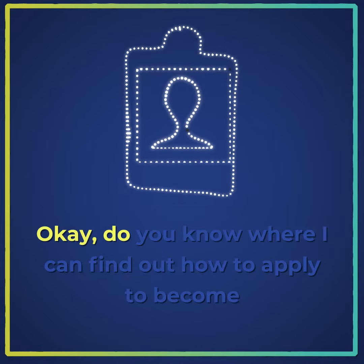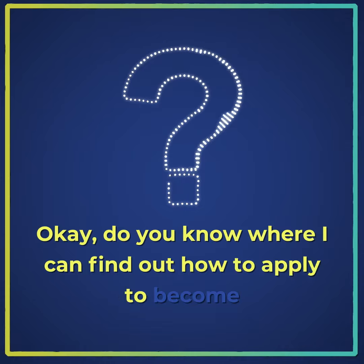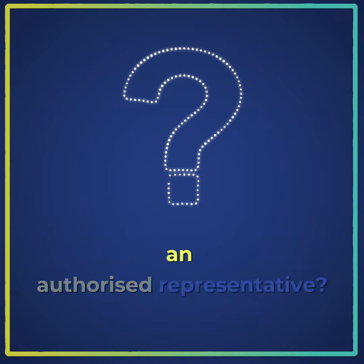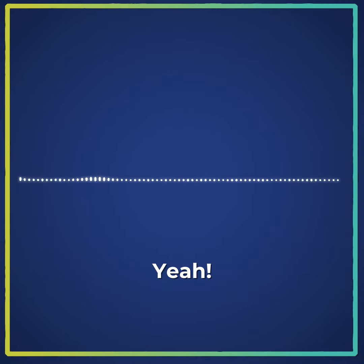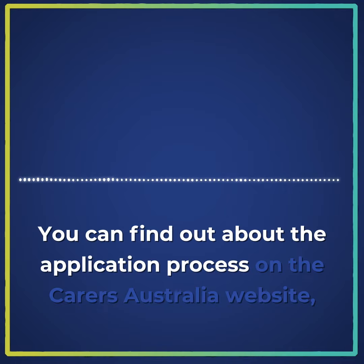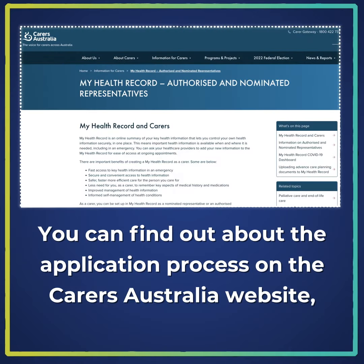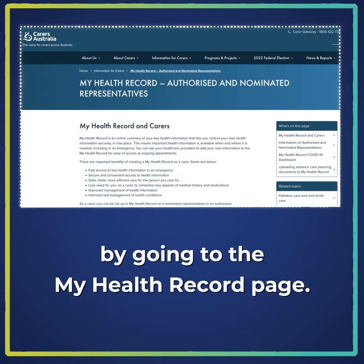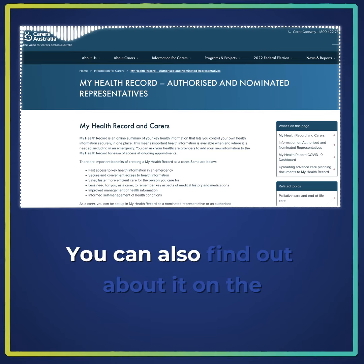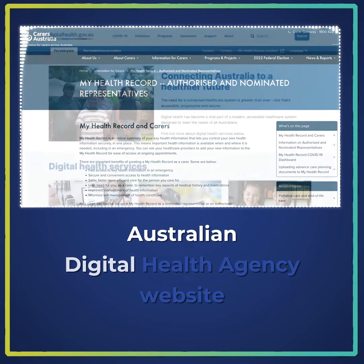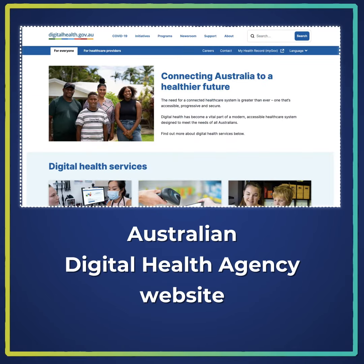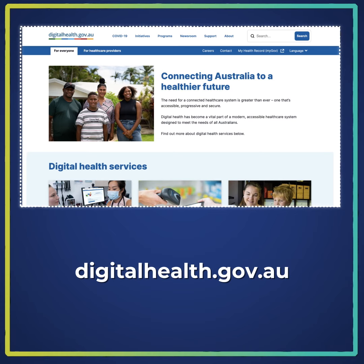Okay, do you know where I can find out how to apply to become an authorised representative? Yeah, you can find out about the application process on the Carers Australia website by going to the My Health Record page. You can also find out about it on the Australian Digital Health Agency website, digitalhealth.gov.au.